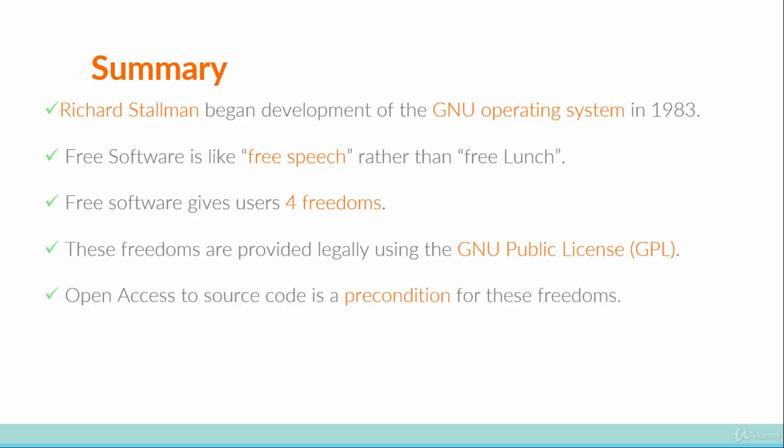Open access to source code is a precondition for giving these freedoms, and when software has openly accessible source code it is known as open source software. You can say that free software is open source, but not all open source software is free software — while people might let you see the source code, that doesn't mean they necessarily give you the freedoms to modify and distribute it. But free software does require open source software, so it works one way but not the other.